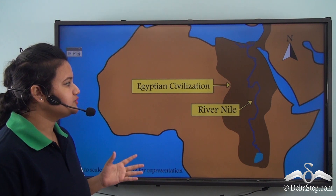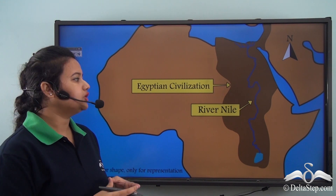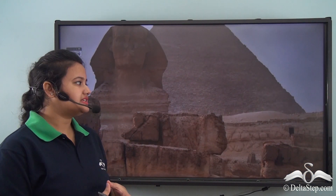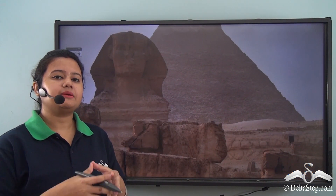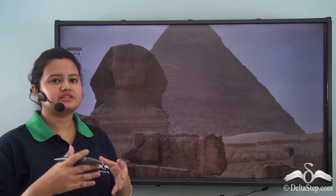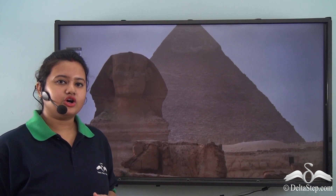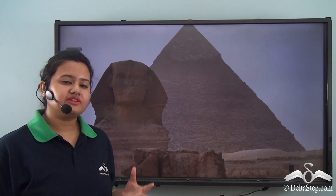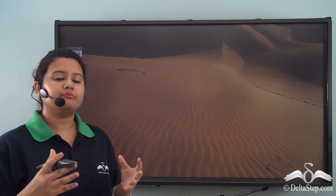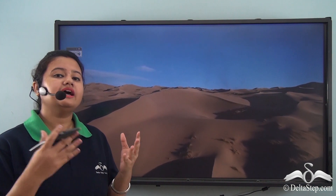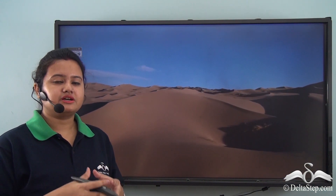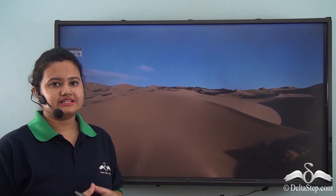This Egyptian civilization flourished along the banks of the river Nile. So we can say that the river Nile played an important role in the development of Egyptian civilization. This is because Egypt, where the civilization flourished, is actually a dry, barren land — simply a desert. In this lesson, we will discuss deserts in detail.